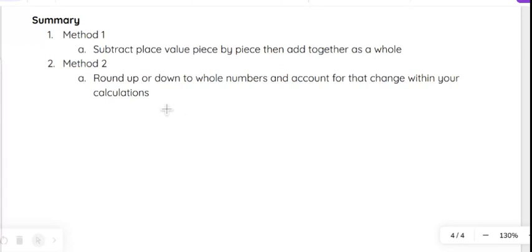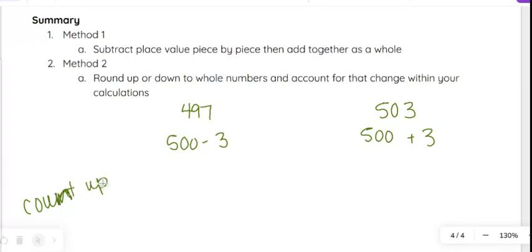We talked about subtracting place value piece by piece and then adding it together as a whole, just like we did with addition. And then same thing with method 2, we talked about rounding up or down to whole numbers and accounting for that change. So rewriting 497, for example, as 500 minus 3, or writing 503 as 500 plus 3. We also talked about that counting up method. Counting up is going to be helpful as well. So just some things to keep in mind as to how you might do this.